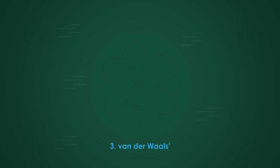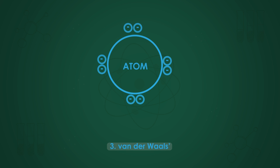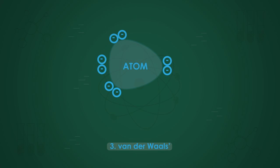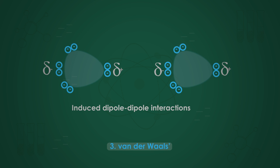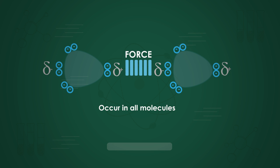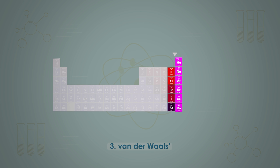Number 3: Van der Waals forces. Note the spelling of Van der Waals forces — it is a lowercase 'v' in 'van' and the apostrophe comes after the 's' in 'Waals'. Van der Waals forces are induced dipole-dipole interactions. They arise out of movement of the electrons in the shells. If we could freeze the action at any moment in time, there would be an instantaneous dipole at that particular moment. These induced dipole-dipole interactions called Van der Waals forces occur in all molecules, whether polar or not.